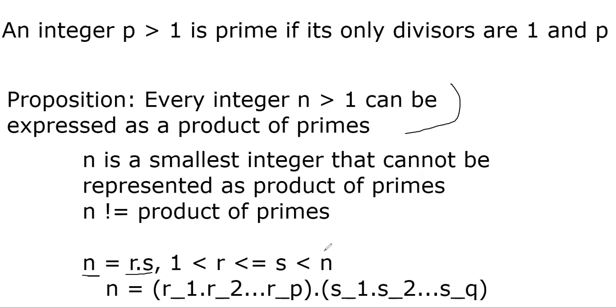r and s are both bounded by n from the left. That means they are smaller than n. That means we can write r and s as product of primes. This is because we assume the n is the smallest integer that cannot be represented as primes. As product of primes. Therefore, r and s can be represented as product of primes. Which means n can also be represented as product of primes. Therefore, there's a contradiction. That means that we will always be able to write every integer as a product of primes.